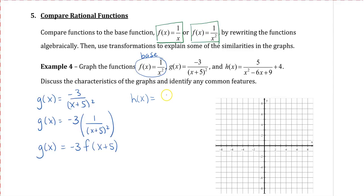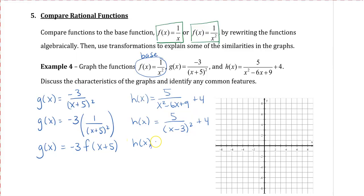Now let's look at h(x). It has a different kind of denominator — a trinomial on the bottom. But if we look more closely, it's actually a perfect square trinomial. Factoring this gives (x−3)² + 4. Rewriting in transformation notation, this is going to be 5 times f(x−3), plus 4. We're plugging in x−3 and substituting it into x. We don't square it separately, because the function f already squares it, and then we add 4.